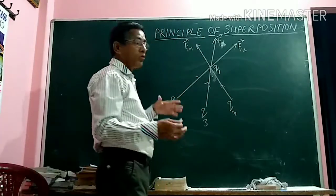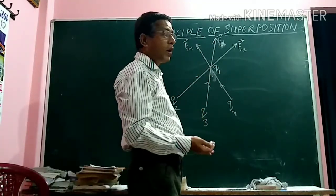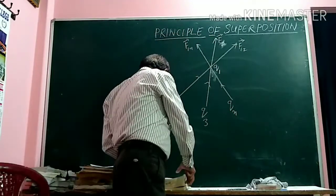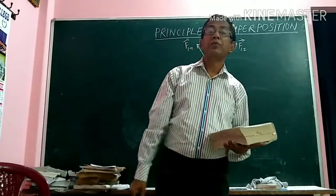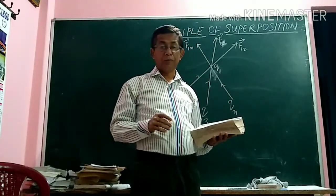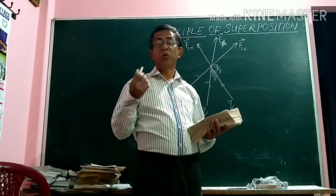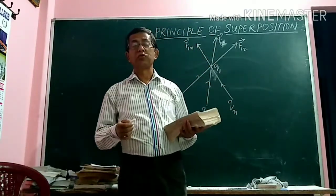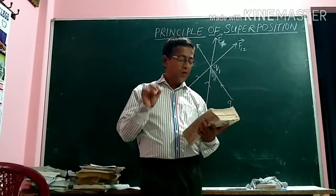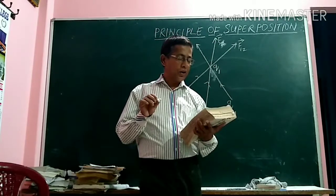Similarly, we can find the net force if all charges apply force on Q2 — that also you can find. All charges apply force on Q3 — that also you can find. The definition from your book states: the Principle of Superposition states that when a number of charges are interacting, the total force on a given charge is the vector sum of the forces exerted on it by all other charges.